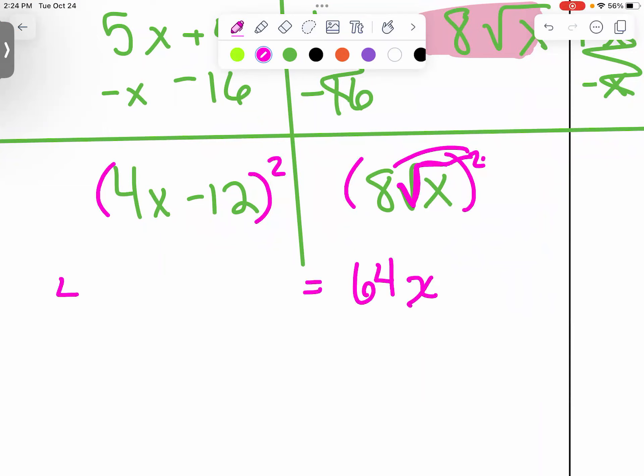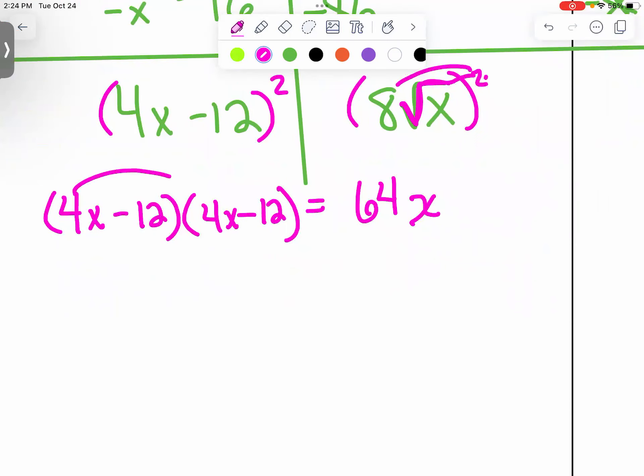Now, when we do this side, everybody make sure you understand. We can't distribute into this side because it's binomial. This times this. 16X. You add and it's binomial. Here times here. 48X.